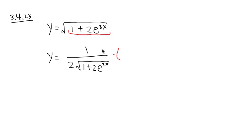Open the parentheses first. The derivative of 1 is going to be 0. I don't need to put that down. Now, the derivative of 2e to the 3x power.